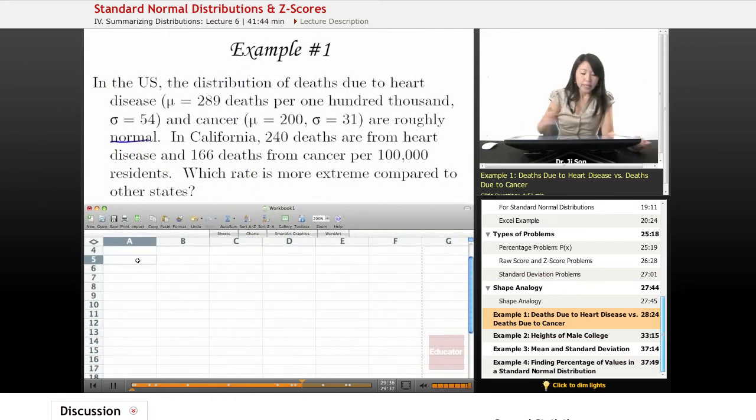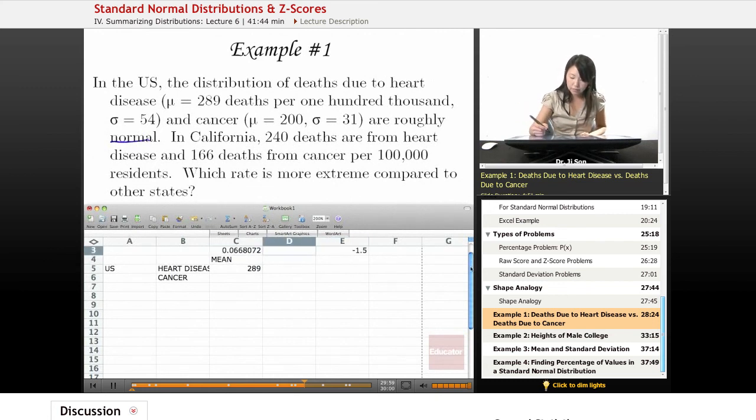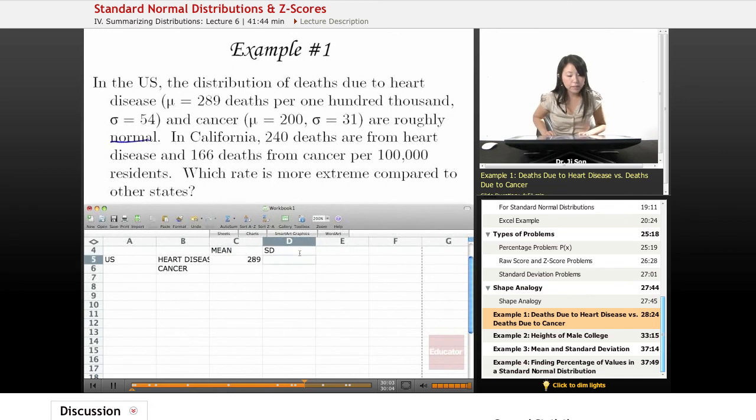So let's first start with the U.S. The U.S. mean for heart disease, I'll use this row for heart disease and this row for cancer. So the U.S. mean is 289 and the standard deviation is 54.